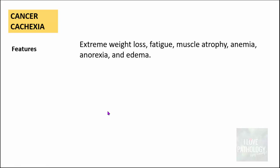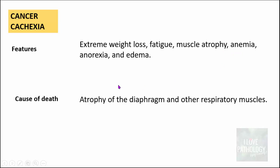Cancer cachexia manifests with extreme weight loss, fatigue, muscle atrophy, anemia, anorexia, and generalized edema. The cause of death in patients with cancer cachexia is basically due to respiratory failure because of atrophy of the diaphragm and other respiratory muscles.